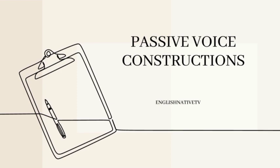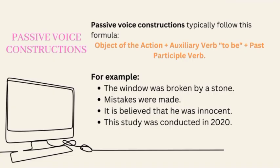In the passive voice, the focus of the sentence is on the action being performed rather than the person or thing performing the action. Passive voice constructions are often used when the performer is unknown or unimportant, or when the writer wants to emphasize the action rather than the doer. They typically follow this formula: object of the action + auxiliary verb 'to be' + past participle verb.